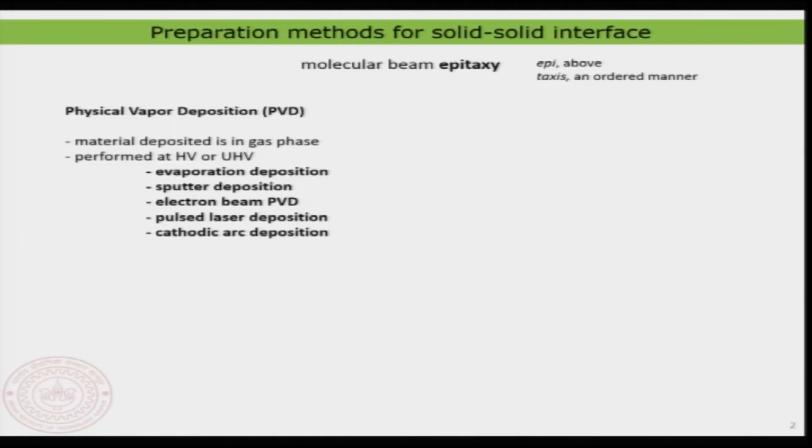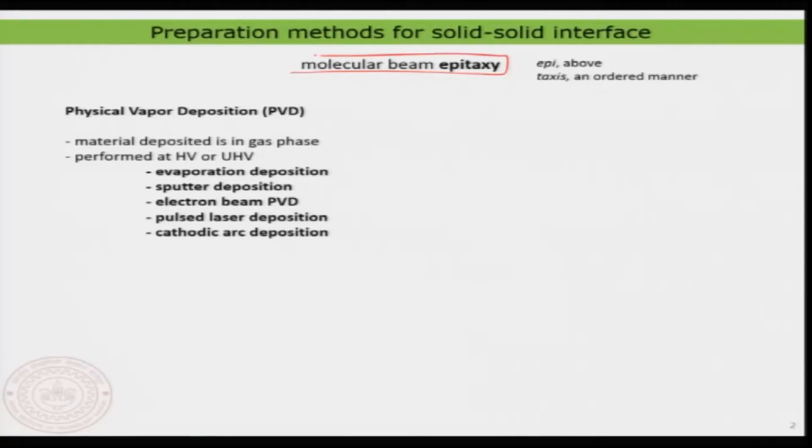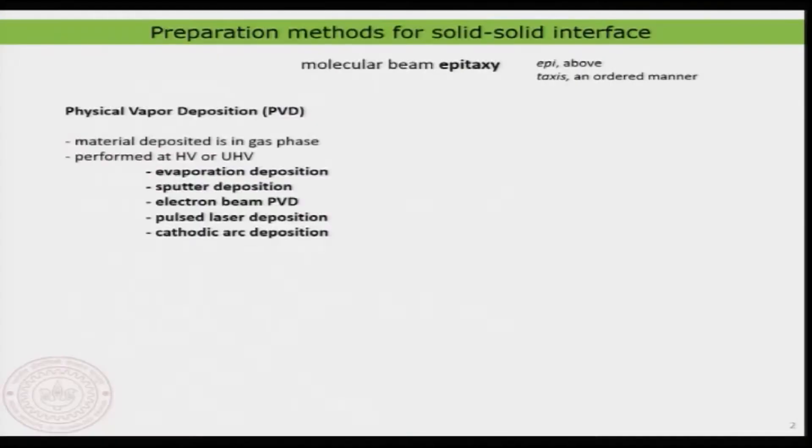Let us look at the preparation. In general, when you prepare a molecular or an add layer of any material — be it a molecule, atom, or whatsoever — on top of another crystalline surface, that methodology is known as molecular beam epitaxy. Epitaxy means something above something in an ordered manner, so epitaxy generally represents forming some kind of an ordered layer. This ideally means we are making a solid-solid interface, both crystalline, and that process is known as an epitaxy process.